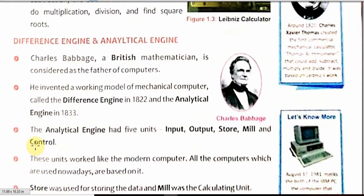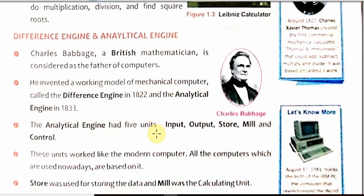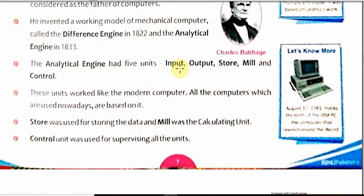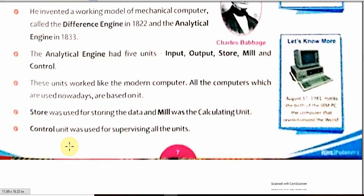The next invention was by Charles Babbage. Charles Babbage was a British mathematician from Great Britain and he is considered the father of computer. Students, remember: the father of computer is Charles Babbage. He invented a working model of a mechanical computer called the difference engine in 1822, and eleven years later, in 1833, he invented the analytical engine. The analytical engine has five parts — students remember: input, output, store, mill and control. These units work like a modern computer. The store was used for storing data, the mill was used as the calculating unit, and the control system was used for supervising all the units.